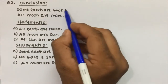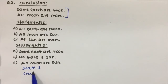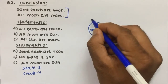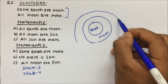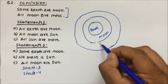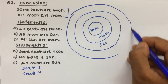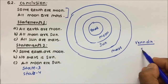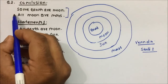Question number 2. There are two conclusions followed by two statements — as mentioned, in the exam there may be more statements like statement 3, 4, or 5. So let's draw the diagram. All earth are moon — so all earth will be inside moon. All moon are sun — so all moon will be inside sun. And all sun are Mars — so all sun will be inside Mars. This is the Venn diagram for statement 1.